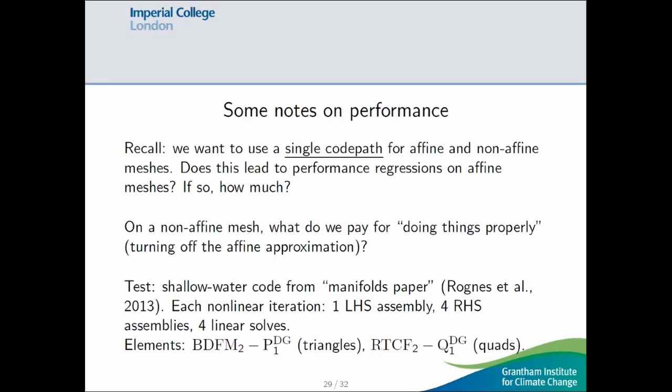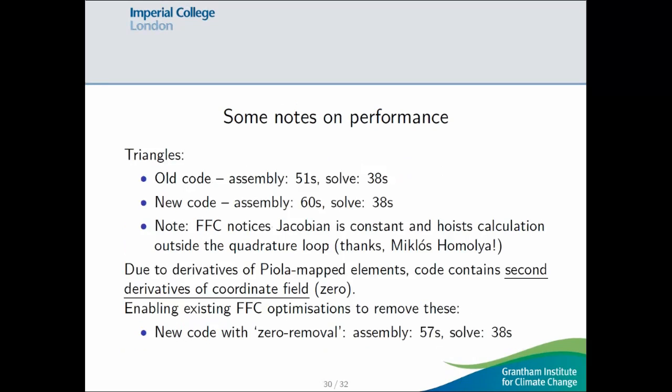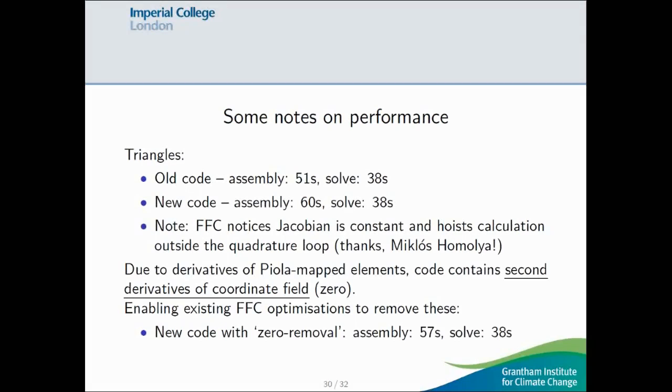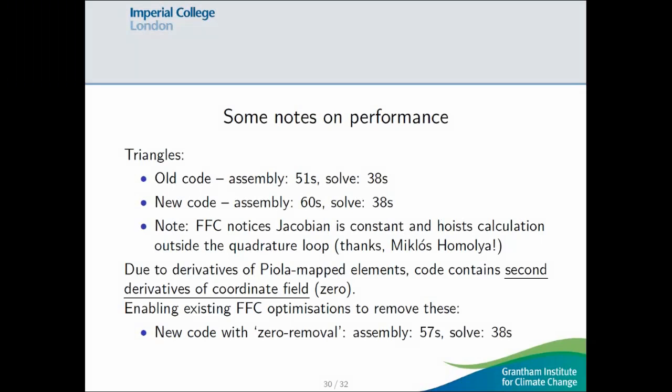So, on triangles, the old code, for a particular set of parameters, 51 seconds to assemble, 38 seconds to solve. With the new code, the 51 seconds went up to 60 seconds, so this is still on flat triangles, so this is a performance regression. However, the numbers should be exactly the same, so the solve remained at 38 seconds. And, this relied on some optimizations that we made to FFC.